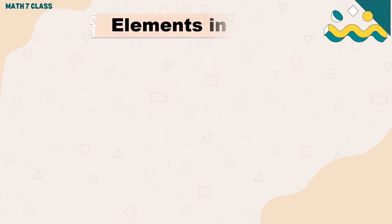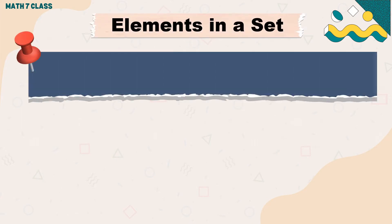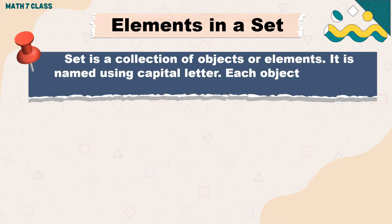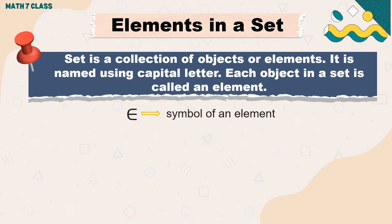Let's discuss about the elements in a set. As we previously defined, a set is a collection of objects or elements. It is named using a capital letter. Each object in a set is called an element. This is the symbol for an element.